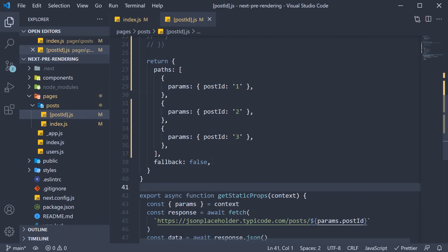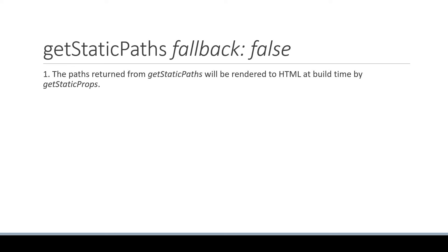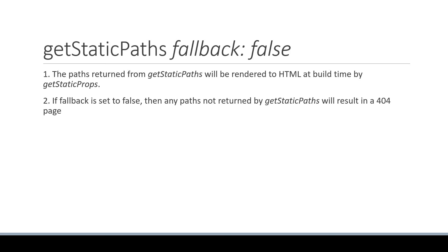Which now brings us to the fallback key with a value of false. Here are the points to keep in mind. When fallback is set to false, the first point is that the paths returned from getStaticParts will be rendered to HTML at build time by getStaticProps. The second point is that if fallback is set to false, then any path not returned by getStaticParts will result in a 404 page.